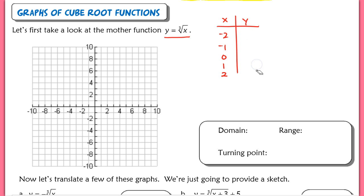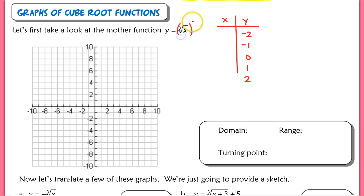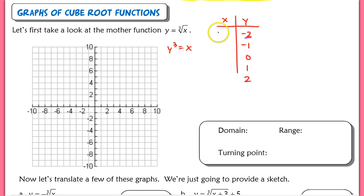So instead, just like when we were dealing with square roots, we're going to pick y values. If I want a y output of negative 2 all the way up to 2, I'm going to solve for x. To solve for x, take the cube of both sides — so y cubed equals x. All we have to do is cube the y value: negative 2 cubed is negative 8, negative 1 cubed is negative 1, 0 cubed is 0, 1 cubed is 1, and 2 cubed is 8. Here are the points on the graph of our mother function y equals the cube root of x.